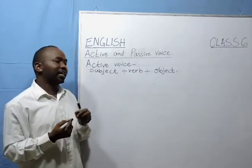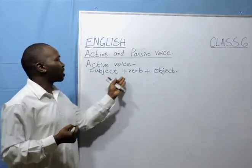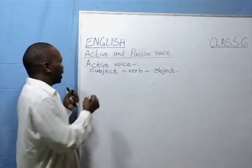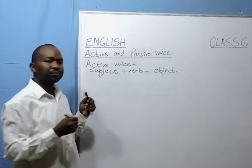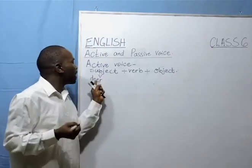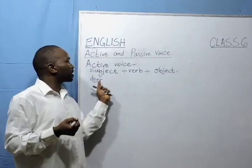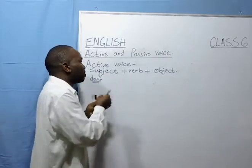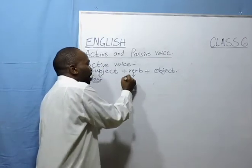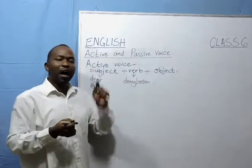Now, I know some of us are wondering what are these that we are writing on the board — what is the subject? The verb, I'm sure you're aware of it, and then the object. Let me explain. In a sentence, the subject is the doer of the action — the person who does the action represented by the verb. The verb is the doing word or the action word.